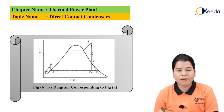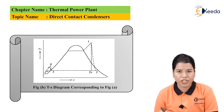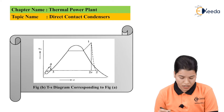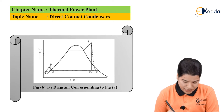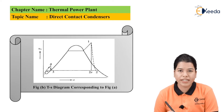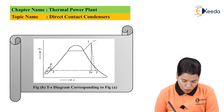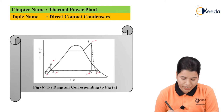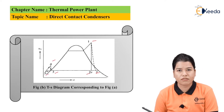The T-S diagram corresponding to figure A is shown in figure B. Here we can see the various states: 1, 2, 3, 4, 5, and 2s.